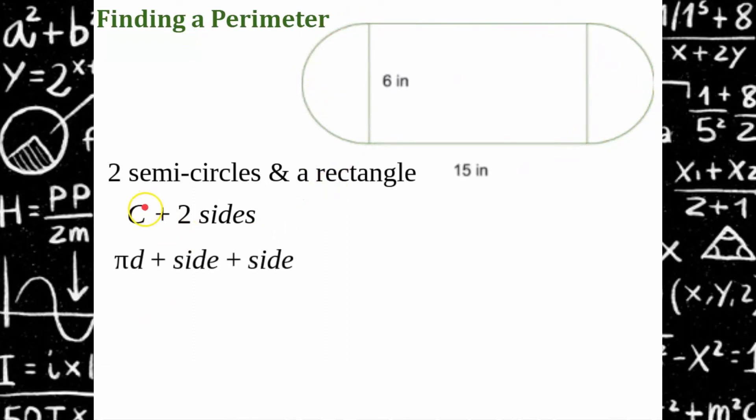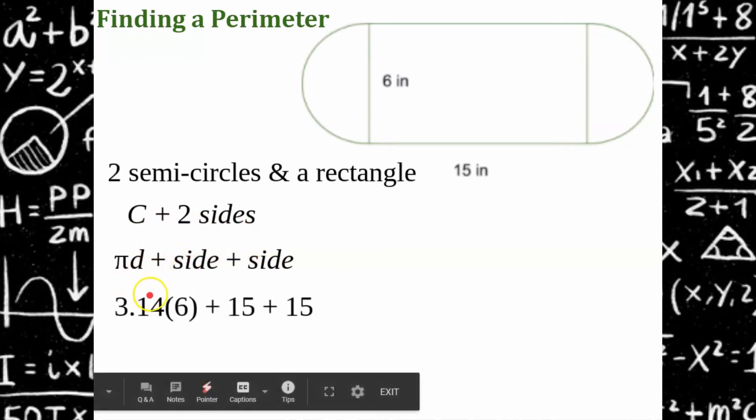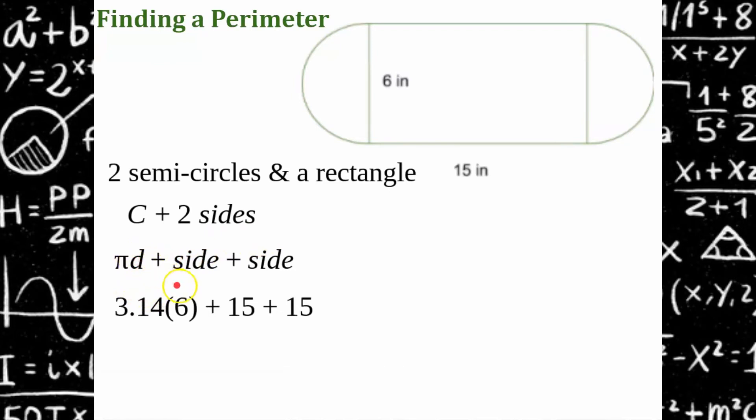To find the circumference, we're going to do pi times the diameter, add the side, and add the second side. So to find pi we replace it with 3.14. The diameter of the circle is 6 and each side is 15. Even though this side is not labeled, it's parallel to this side, so these are equal.